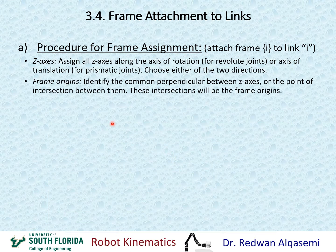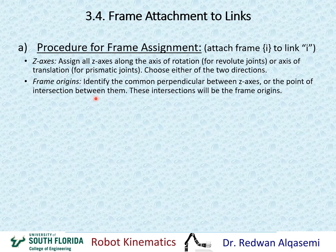The second step is frame origins — how do we define them? Identify the common perpendicular between Z axes, or the point of intersection between them if they intersect. Z axes don't have to intersect, but if they do, identify that intersection point. If they don't intersect, identify the common perpendicular between the Z axes. These intersections will be the frame origins. If Z axes don't intersect, the intersection between the Z axes and the common perpendicular would be the origin for the frames.